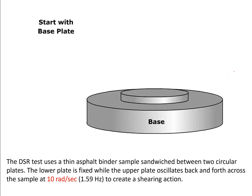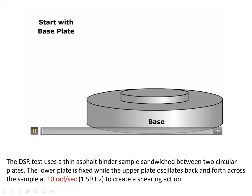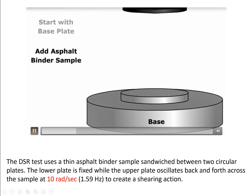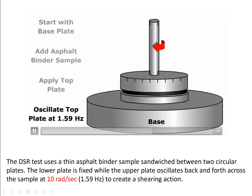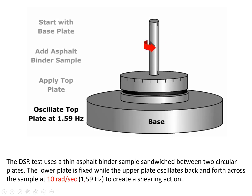Let's see the experimental process. We start with the lower plate, then add the asphalt binder sample in between and apply the top plate. The top plate will be oscillating at 1.59 Hz, which is 10 radians per second, to create a shear action. The specified oscillating rate of 1.59 Hz is meant to simulate the shear action corresponding to a traffic speed of about 55 miles per hour.